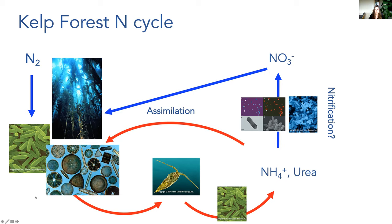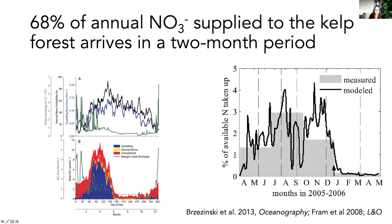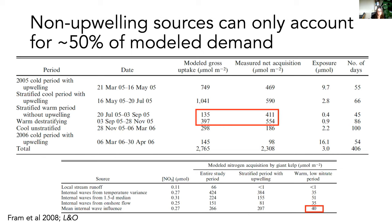This figure on the left is from Mark's 2013 paper. The figure on the right is from Fram et al. 2008 from Sally McIntyre's group. It summarizes the large-scale nitrogen dynamics in this area: 68% of the annual nitrate supplied to the kelp forest arrives during a two-month period, and so much nitrate is coming in that the percent of available nitrogen actually taken up is quite small during that time. At its maximum, they calculated something like five percent of the available nitrate delivered is actually taken up by kelp. So because nitrate arrives during this constrained temporal period, the question is where kelp are getting nitrogen to fuel their summer growth.